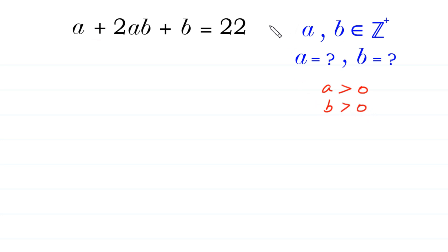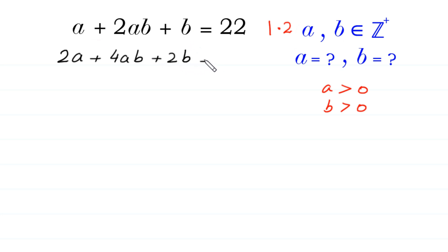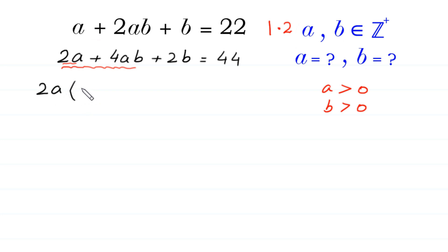Let us start by multiplying both sides of this equation by 2. We get 2a + 4ab + 2b = 44. From the two terms 2a + 4ab, we can factor out 2a, giving 2a(1 + 2b) + 2b = 44.